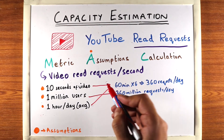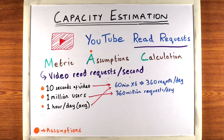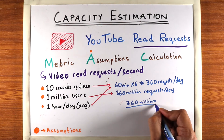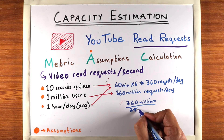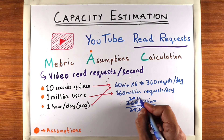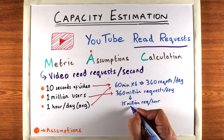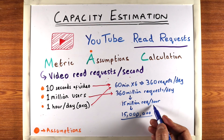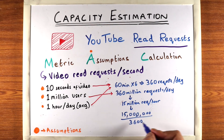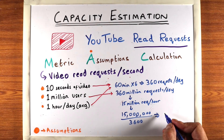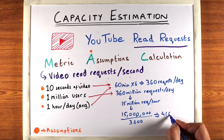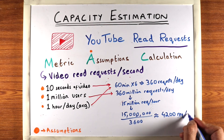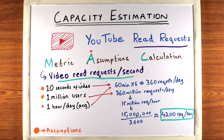We have requests per day, but we're looking for requests per second. First, get requests per hour: 360 million divided by 24 — which simplifies to 15 million requests per hour. Then divide by 3,600 seconds per hour to get requests per second. This comes out to approximately 4,166.66, or roughly 4,200 requests per second. That is our number of video read requests per second.